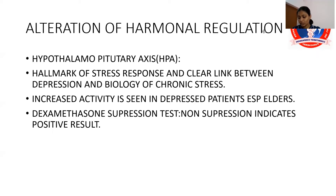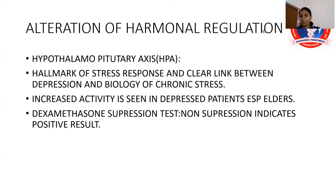Diminished release of TSH in response to thyrotropin-releasing hormone is reported in both depression and mania. Hypocortisolemia in depression suggests one or more of the following central disturbances: decreased inhibitory serotonin tone, increased drive for norepinephrine, acetylcholine, or cortisol-releasing hormone, or decreased feedback inhibition from the hippocampus. Increased HPA activity is seen in 60% of depressed patients, especially in melancholic depression. A short period of starvation or several weeks of partial sleep deprivation can induce hypocortisolism.